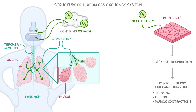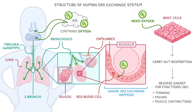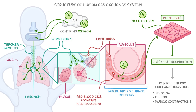These alveoli are surrounded by tiny blood vessels called capillaries. If we look more closely at just one alveolus, this is actually where gas exchange happens, as oxygen moves from the air in the alveolus into the blood in the capillaries. Oxygen enters red blood cells which contain haemoglobin, a substance that lets them carry oxygen through the bloodstream to the body cells where it's then used for respiration.